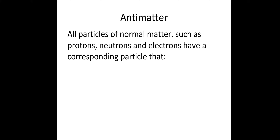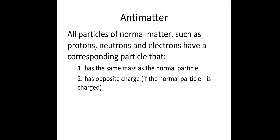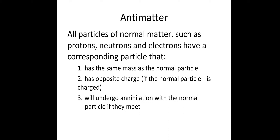So what is antimatter? Particles of normal matter, such as protons, neutrons, and electrons, have a corresponding particle that has the same mass as the original particle, has the opposite charge — that's if the normal particle is indeed charged — and will undergo annihilation with the normal particle if they meet.